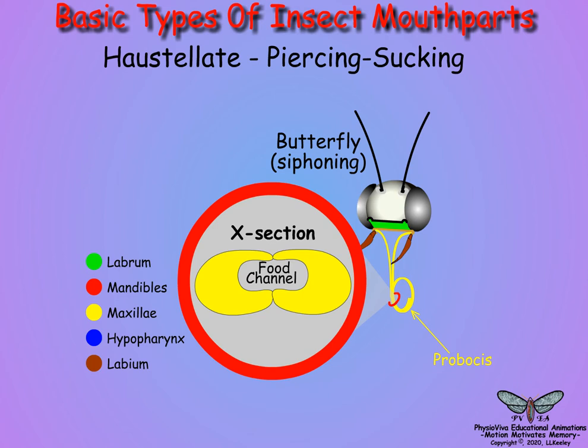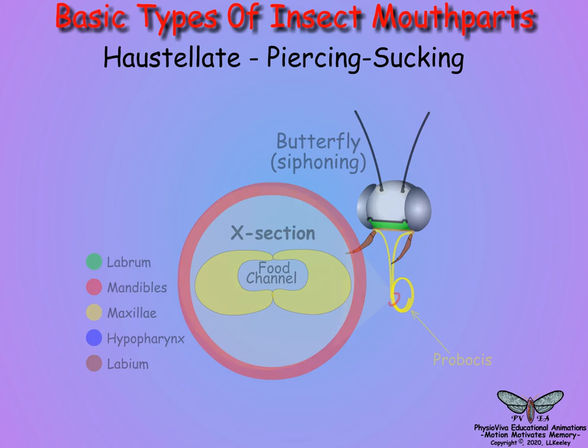By contrast, the haustellate siphoning proboscis of Lepidoptera consists of a single structure formed by fused extensions of the maxillae. A salivary channel appears to be absent, and the food channel is formed by the juncture of the maxillary extensions. Labial palps are also usually well developed, but mandibles, labium, hypopharynx, and maxillary palps are reduced or lacking in most Lepidopteran species, and the labrum is a small plate at the base of the proboscis.